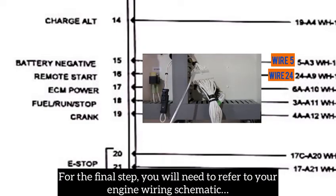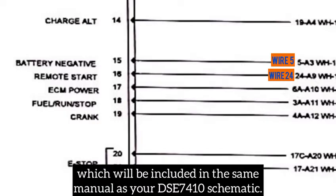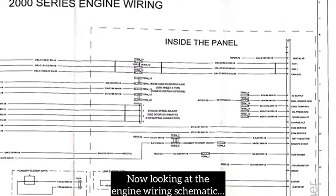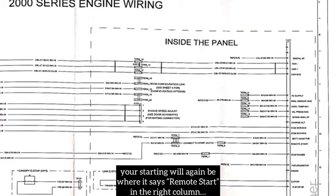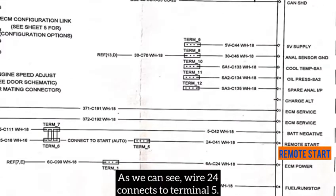For the final step, you will need to refer to your engine wiring schematic, which will be included in the same manual as your DSC 7410 schematic. Now looking at the engine wiring schematic, your starting point will again be where it says "remote start" in the right column.